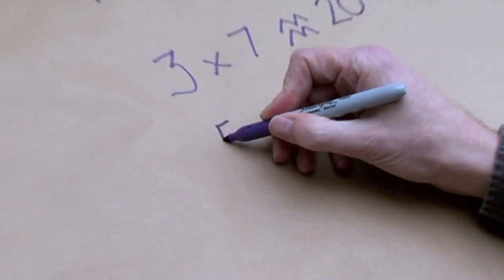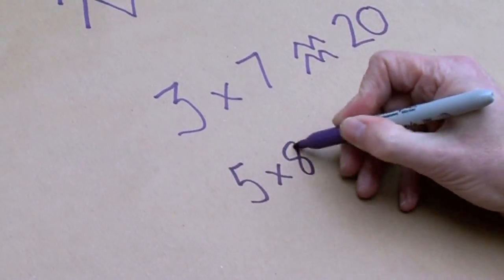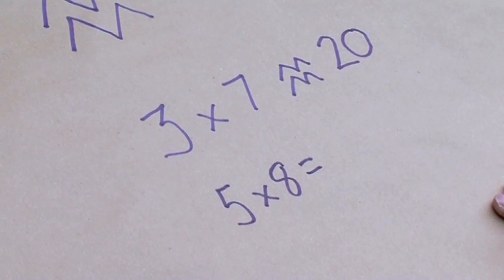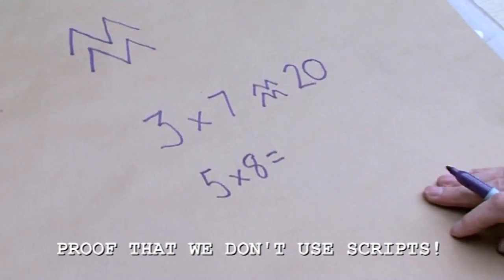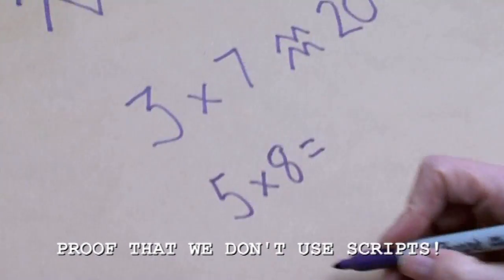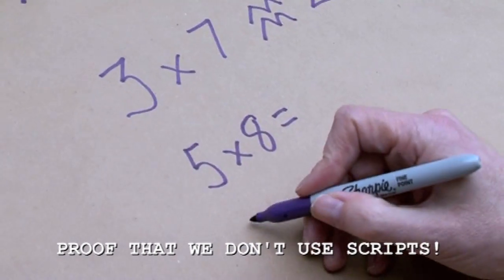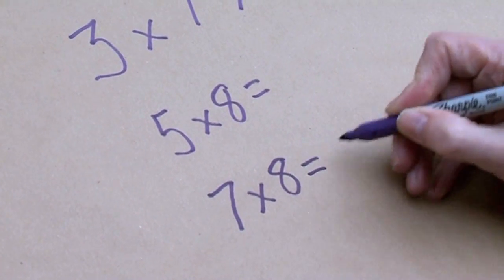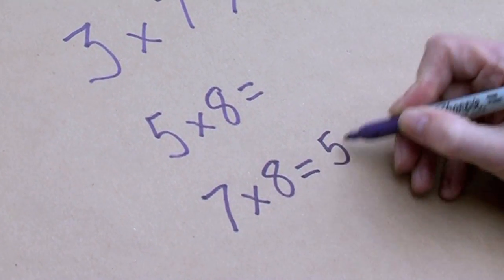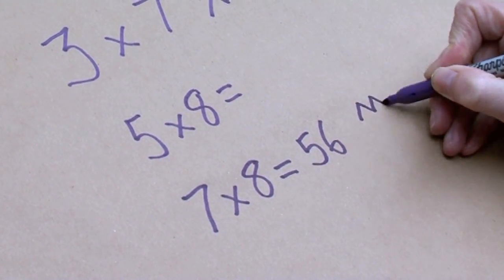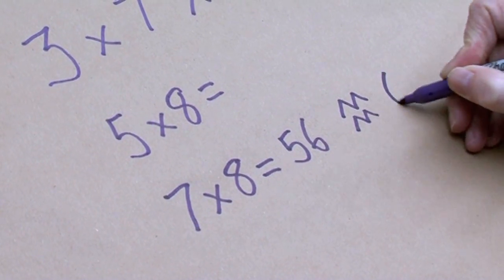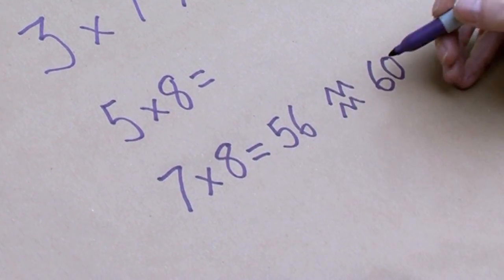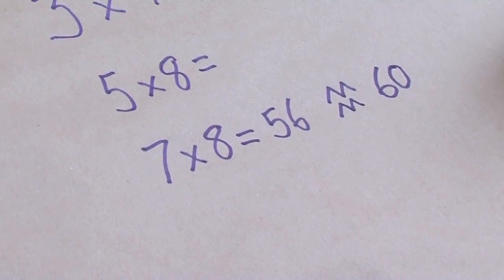Let's take another one. Let's do 7 times 8, because no one can ever remember that. It equals 56, but it z equals 60, because you round it ruthlessly to one significant figure.